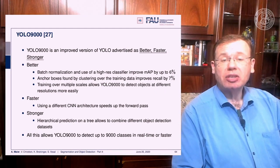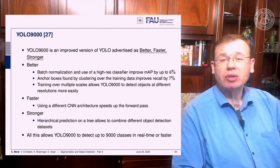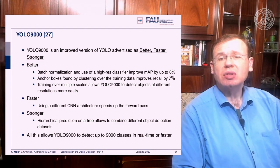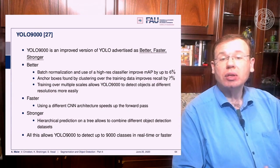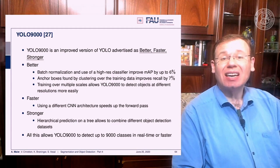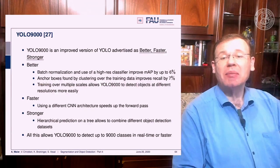It's better because batch normalization is used and they also do high-res classification to improve the mean average precision by up to 6%. Anchor boxes found by clustering over the training data improve recall by 7%. Training over multiple scales allows YOLO 9000 to detect objects at different resolutions more easily. It's faster due to a different CNN architecture that speeds up the forward pass. It's stronger because hierarchical detection on a tree allows combining different object detection datasets, enabling YOLO 9000 to detect up to 9000 classes in real time.